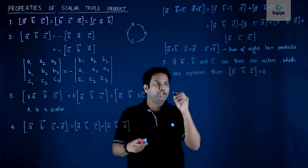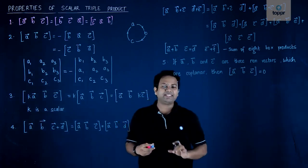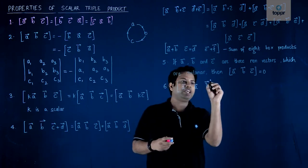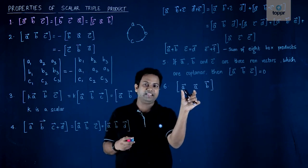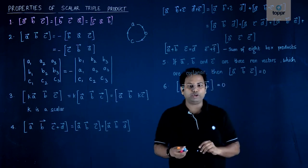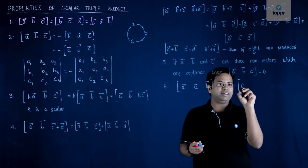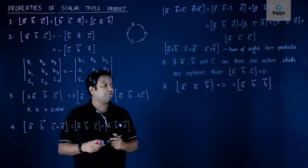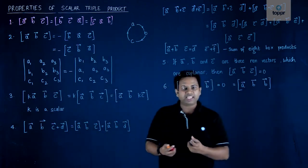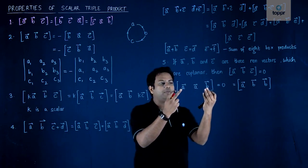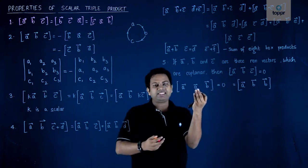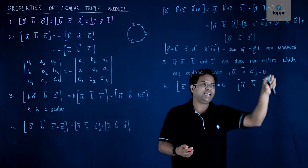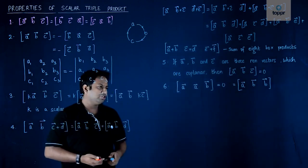The sixth property follows from the fifth: if any vector repeats itself inside the box product — for example box of a, a, b, or box of a, b, b — then the box product equals zero. If two vectors are identical, the three vectors are necessarily coplanar, forming a parallelepiped with height zero. Hence, whenever two of the three vectors inside the box are the same, the scalar triple product is zero.